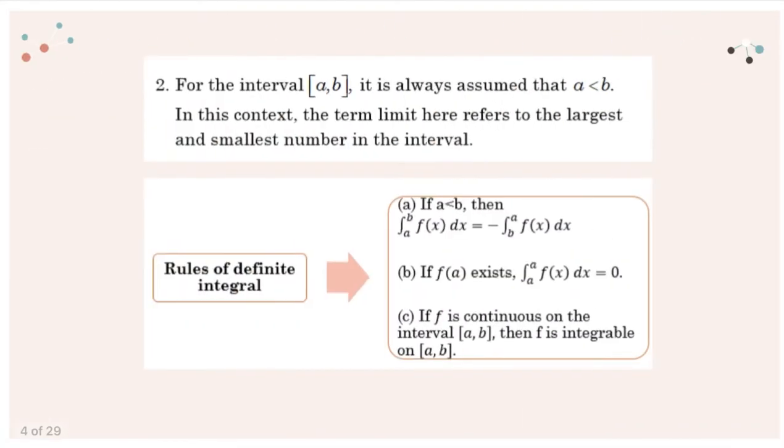For the closed interval [a,b], it is always assumed that a is less than b. In this context, the term limit here refers to the largest and smallest number in the interval.